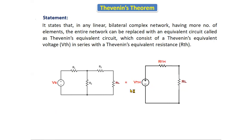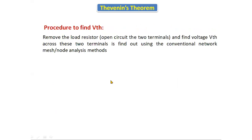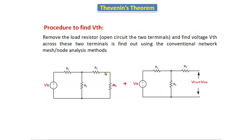Now we are going to see how we will calculate VTH and how we will calculate RTH. There is a procedure to find VTH and there is a procedure to find RTH. To find VTH, open circuit the load resistor — we remove the load resistor — and we find the voltage across the open circuit terminal using mesh analysis, node analysis, or Ohm's law based on our convenience.